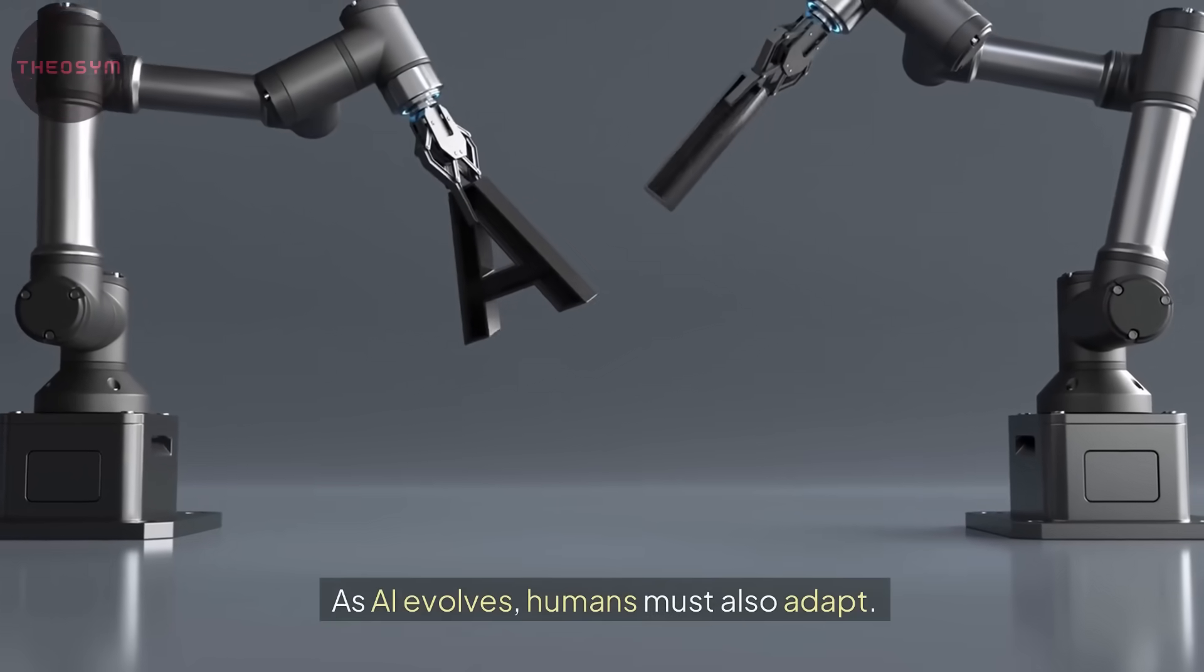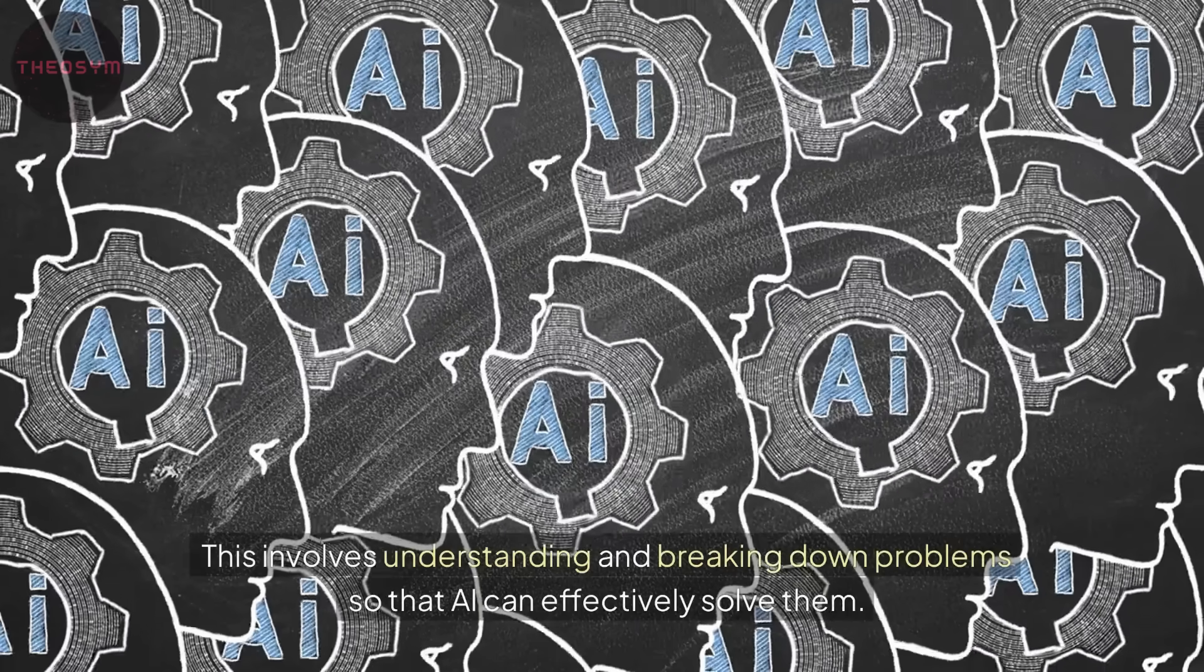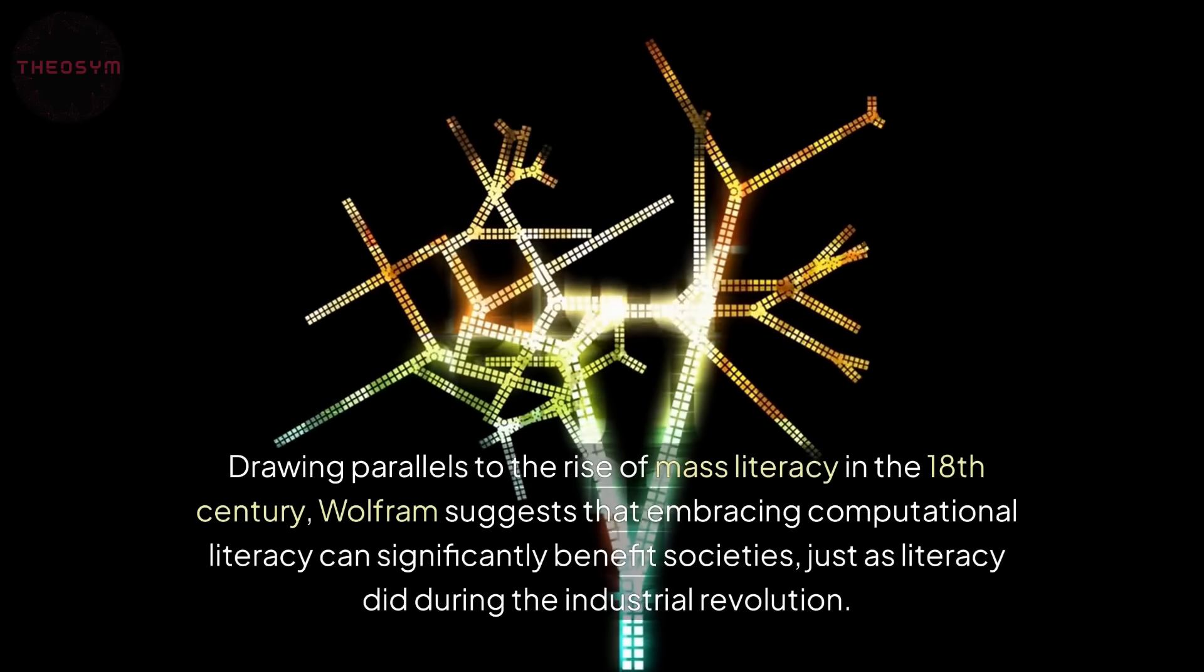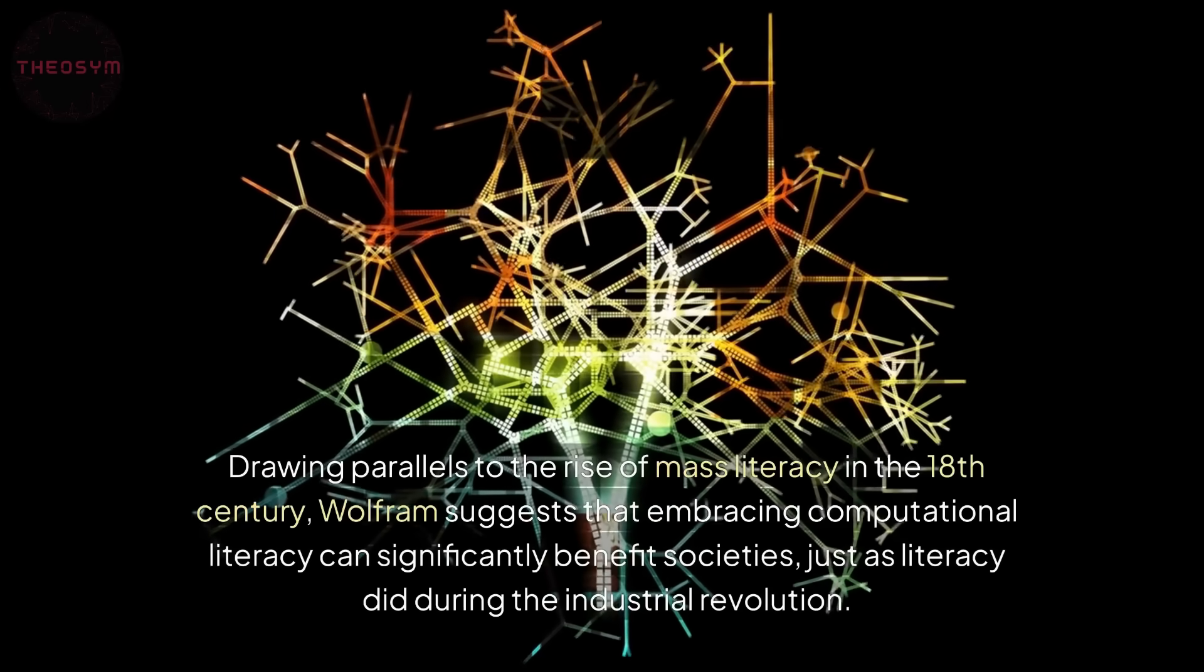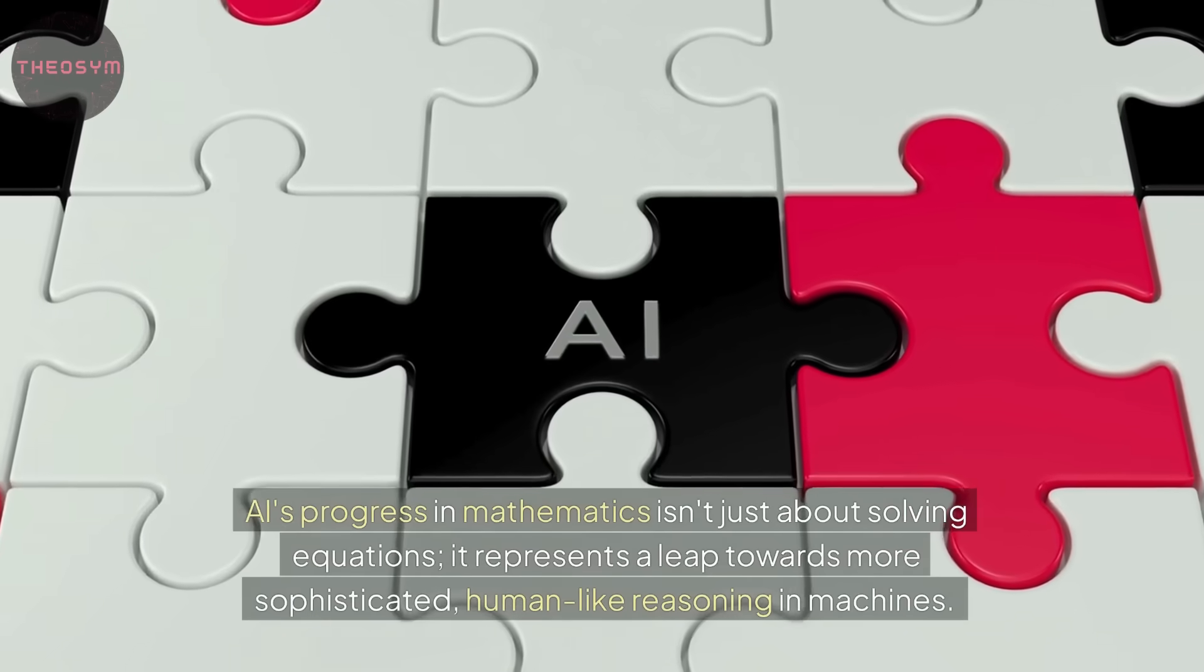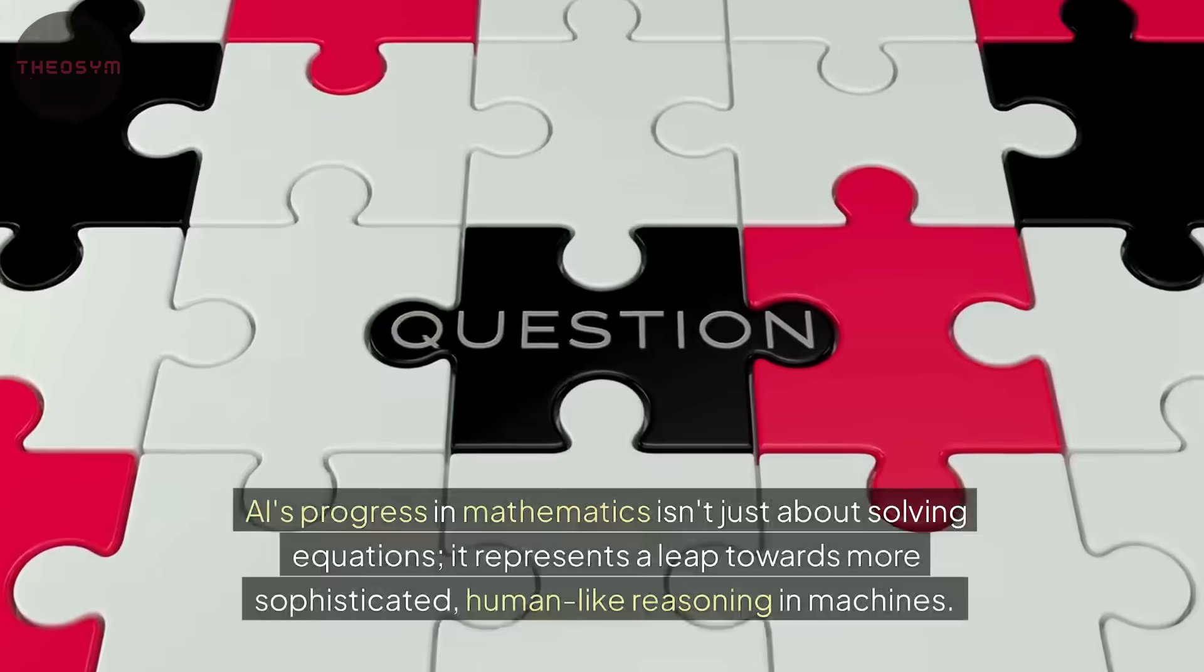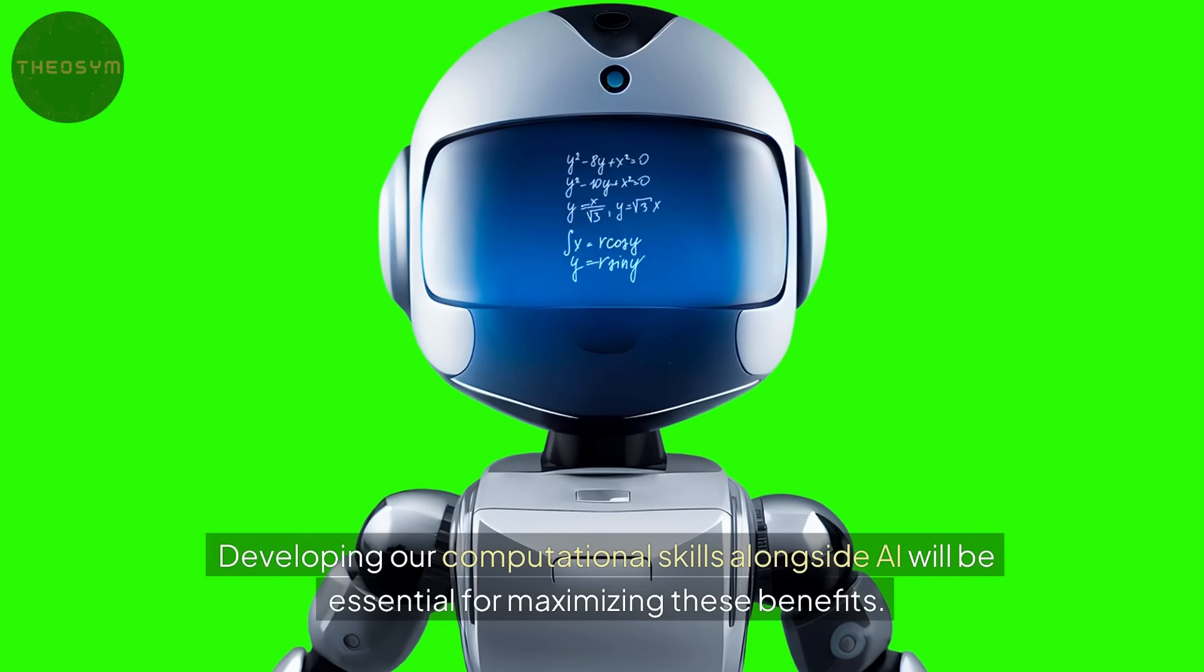As AI evolves, humans must also adapt. Conrad Wolfram from Wolfram Research emphasizes the need for computational thinking. This involves understanding and breaking down problems so that AI can effectively solve them. Drawing parallels to the rise of mass literacy in the 18th century, Wolfram suggests that embracing computational literacy can significantly benefit societies, just as literacy did during the Industrial Revolution. AI's progress in mathematics isn't just about solving equations. It represents a leap towards more sophisticated, human-like reasoning in machines. Developing our computational skills alongside AI will be essential for maximizing these benefits.